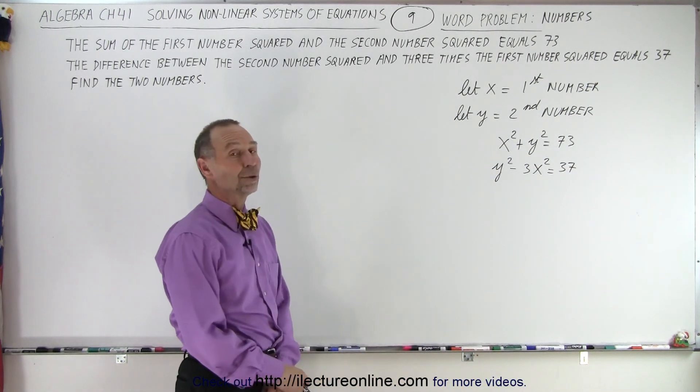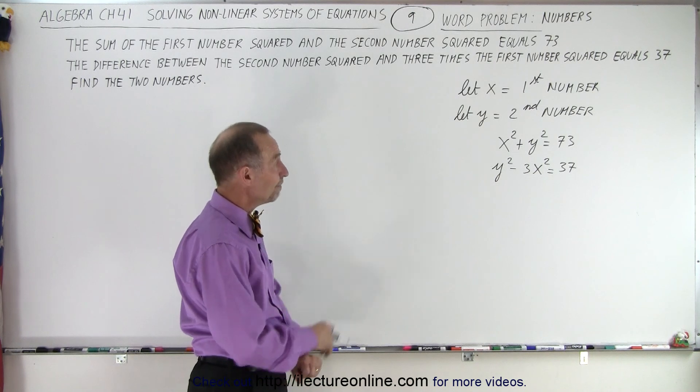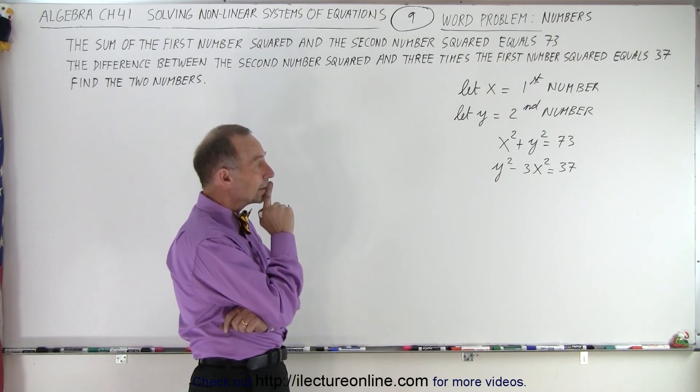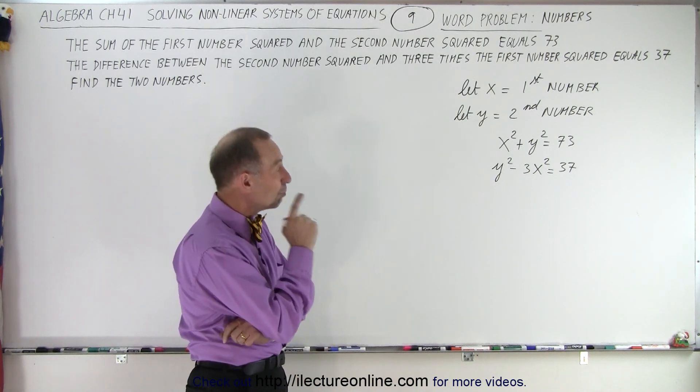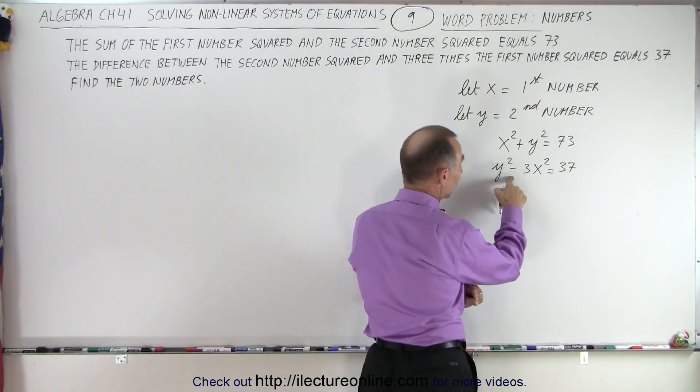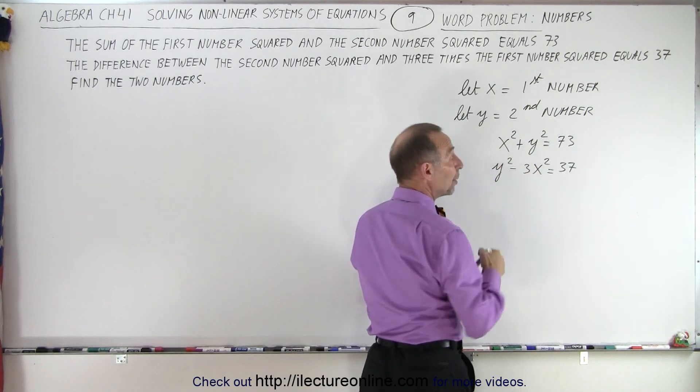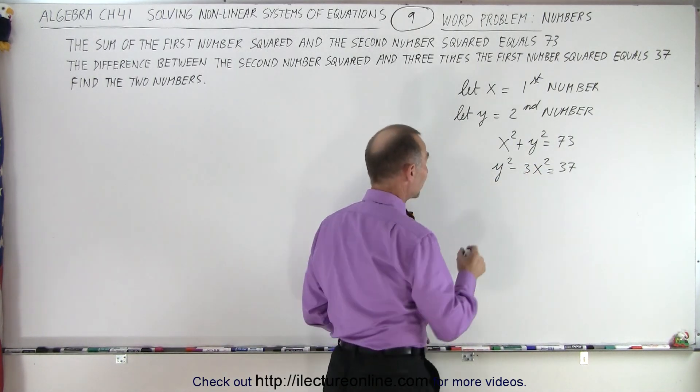Now what do we do? We solve those simultaneously. And I think what we need to do is multiply the second one by negative one, and then we can add them up and eliminate the y's.